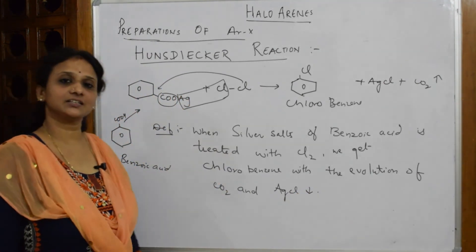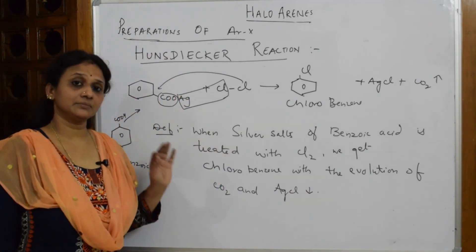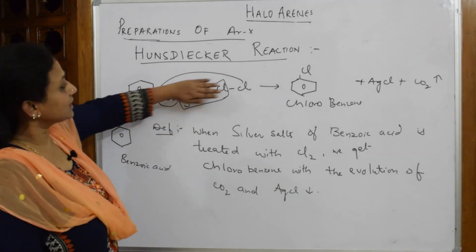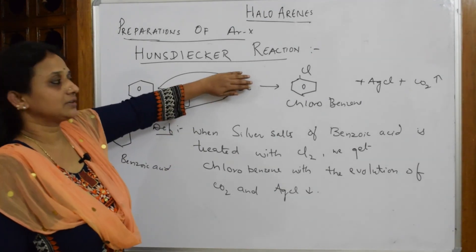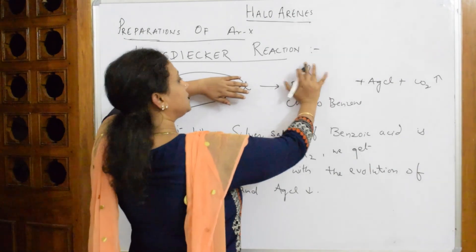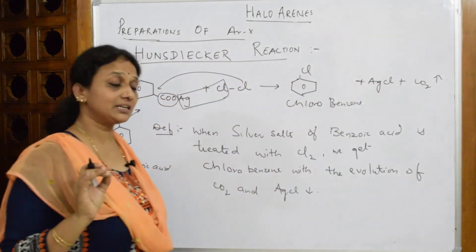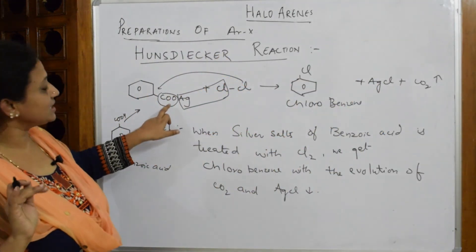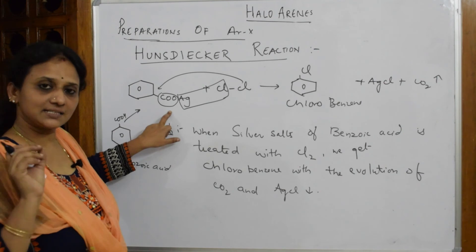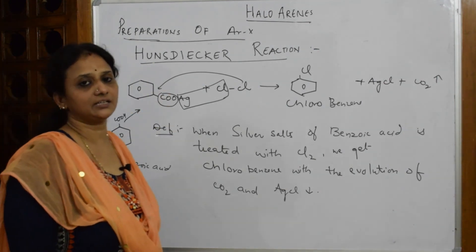This is your Hunsdiecker reaction. In the exam, they may not directly give you this reaction — they'll just give you the silver salt of benzoic acid. If you see the silver salt of benzoic acid, that means you are supposed to apply the Hunsdiecker reaction.